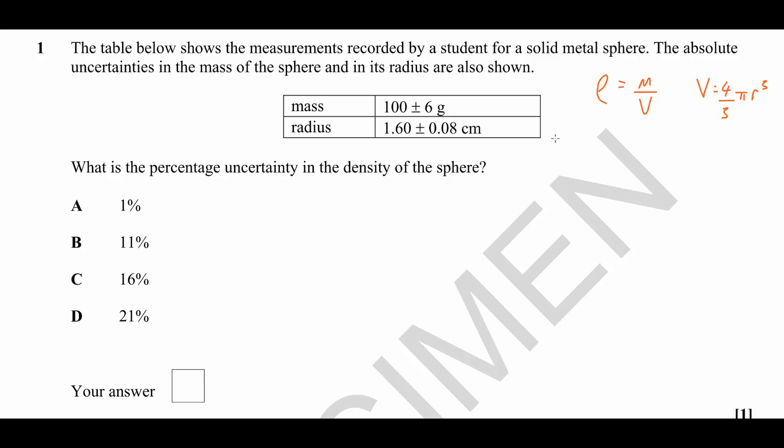The percentage uncertainty in the mass is easy for us to calculate. That is the absolute uncertainty, 6 grams, divided by the quantity, which is 100 grams, multiplied by 100 to turn it into a percentage, which gives us 6%.